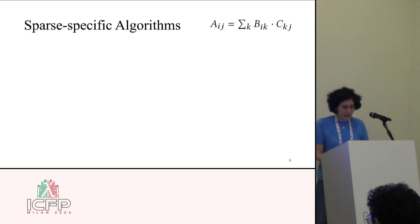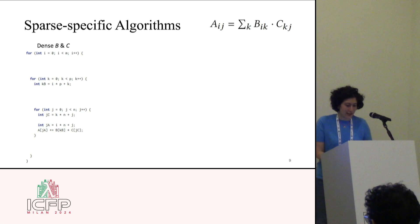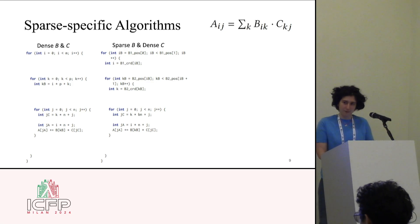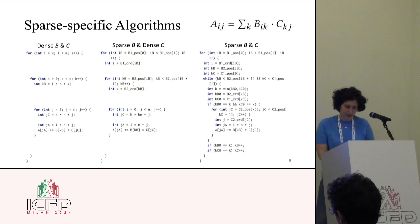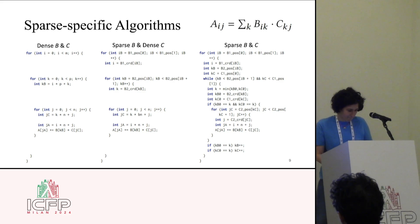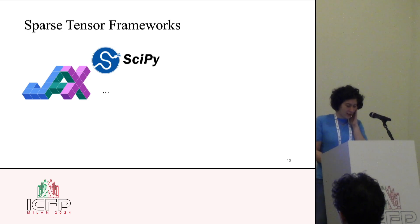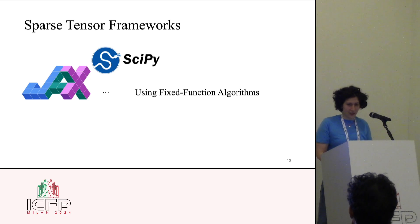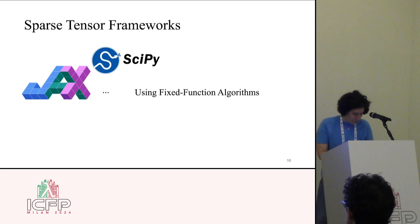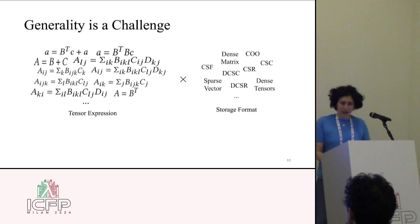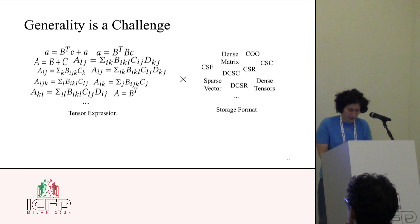What about sparse-specific algorithms? For the same matrix-matrix multiplication example with dense B and C, the code is simple. But when B gets sparse, the code gets more complicated, and when C gets sparse, even more so — with lots of ifs and while loops. Sparse frameworks like SciPy and JAX use fixed function algorithms designed for each computation separately based on the underlying data formats. But the problem is generality is challenging because we have lots of tensor expressions and storage formats, and it's not possible to write optimized algorithms for each of them.